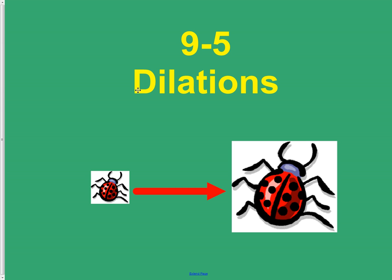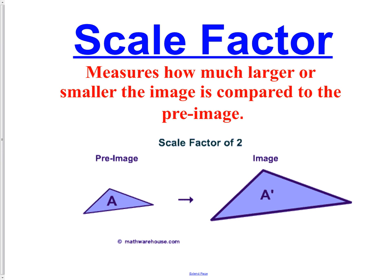In today's lesson we're going to be learning about dilations. If you have heard that word before, you probably heard it at the eye doctor. A dilation is when you enlarge something or you shrink something — you could dilate it smaller as well, but typically dilations are enlargements. In order to understand dilations, we first need to talk about scale factor. The image is the object after something has been done to it; the pre-image is the original.